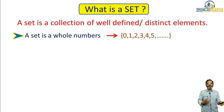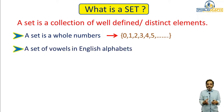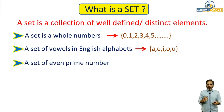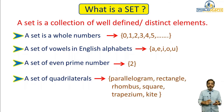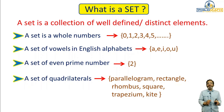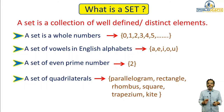The next example is the collection of vowels in the English alphabet — the answer is {a, e, i, o, u}. One more example: the set of even prime numbers. There is only one number which is both even and prime, and that number is 2. Another example is the set of quadrilaterals: parallelogram, rectangle, rhombus, square, trapezium, and kite. All four examples have well-defined, distinct elements.